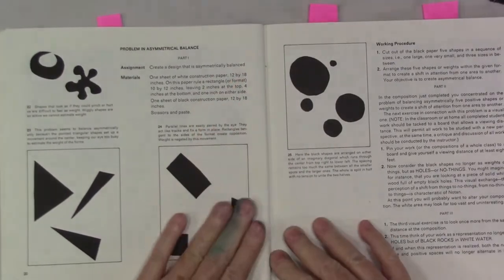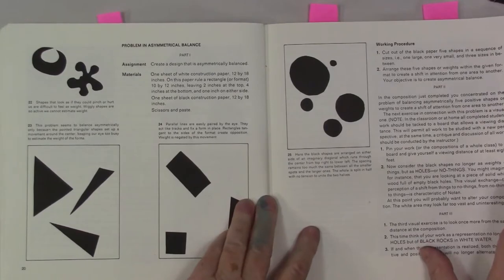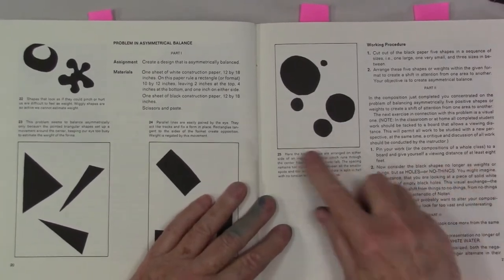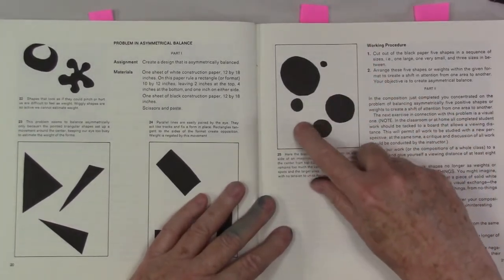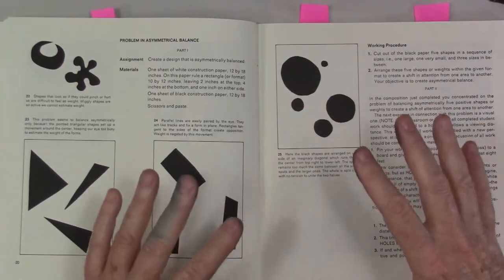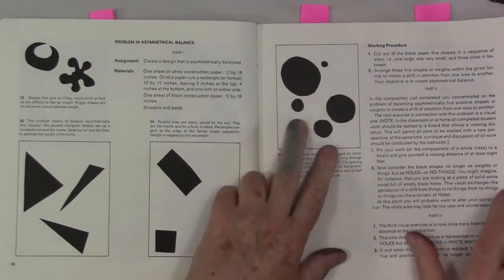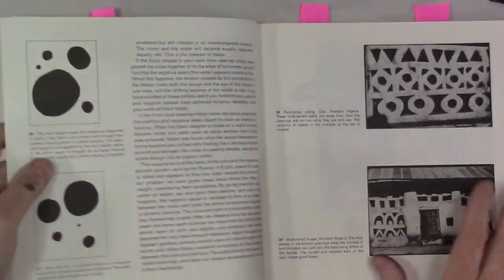And assignments. There's assignments and what kind of materials you need and materials are simple. I love this where there's an imaginary line here and all the composing of the dark shapes is done on either side of that imaginary line and there's a beautiful balance there.